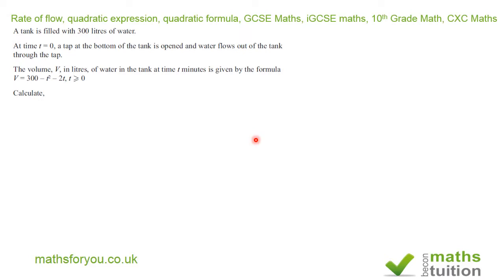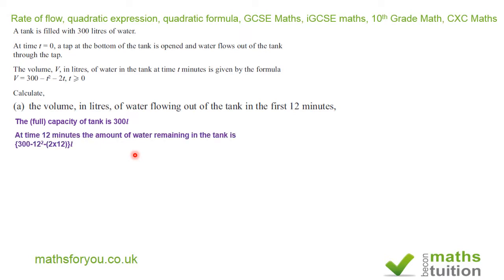Now the amount of water left in the tank at any given time is given by this formula here: 300 minus t squared minus 2t, where t is the time. We are then asked to calculate the volume in liters of water flowing out of the tank in the first 12 minutes.